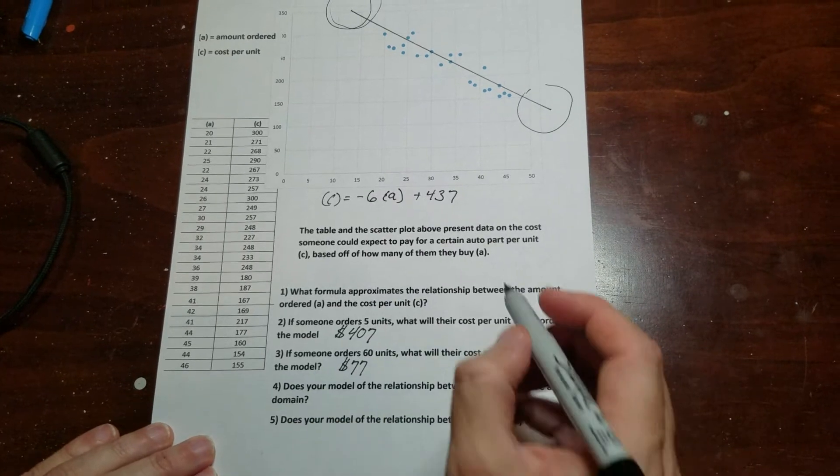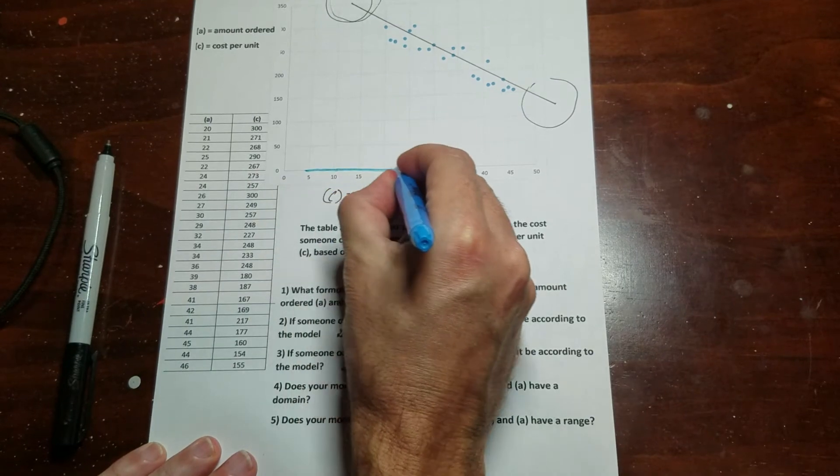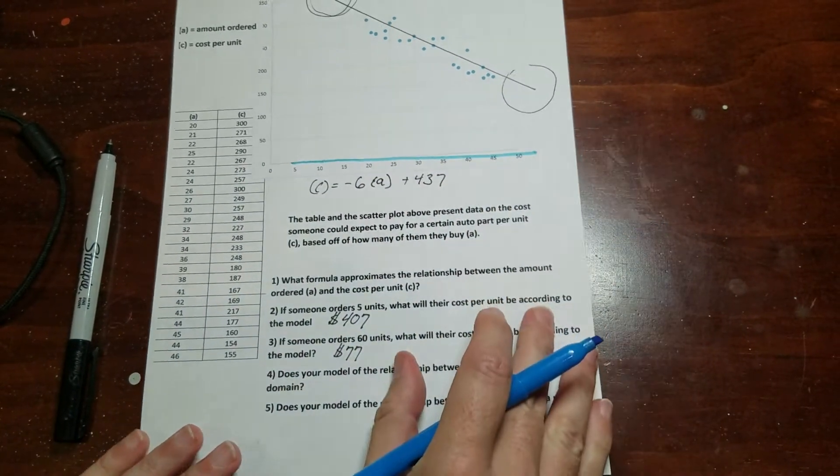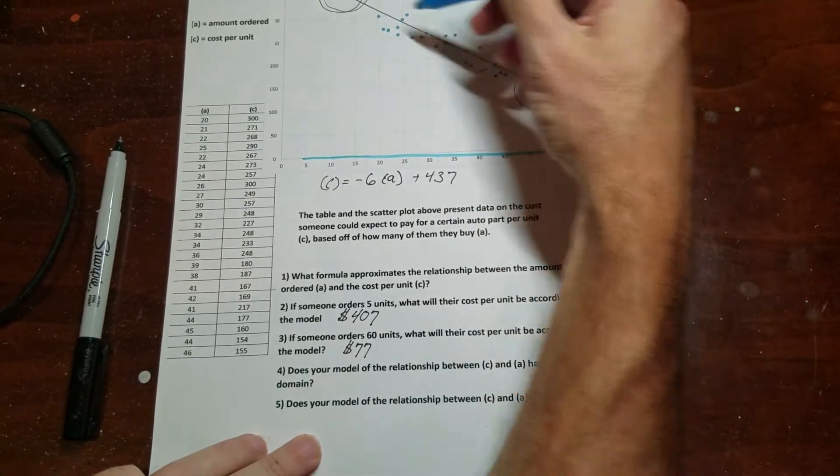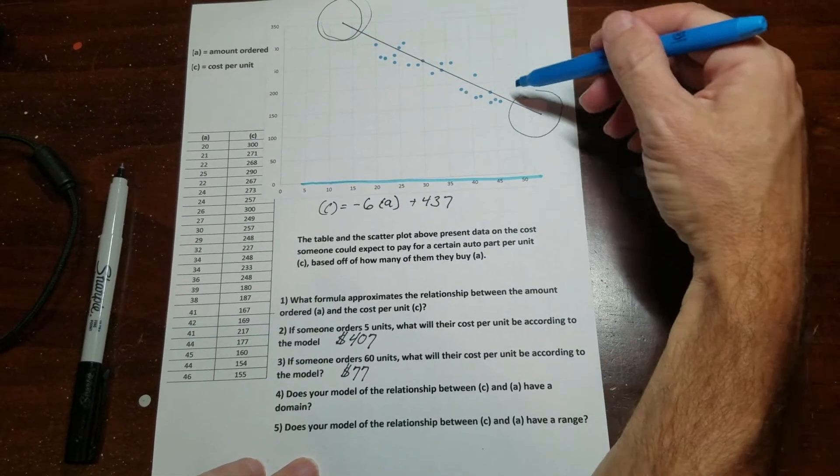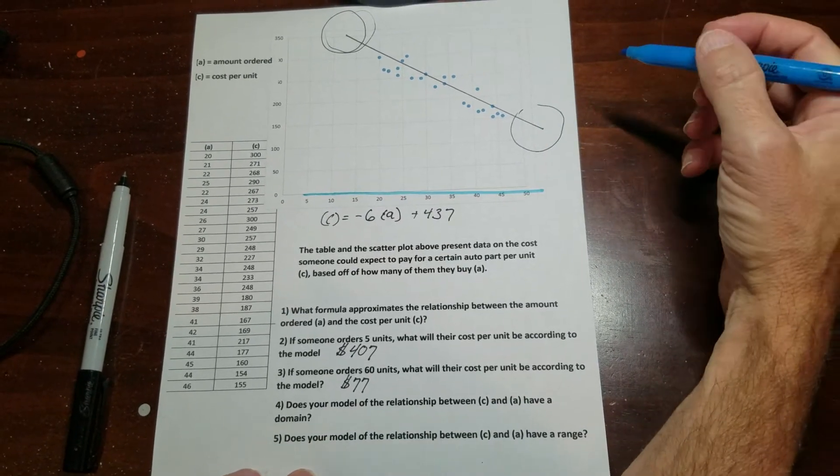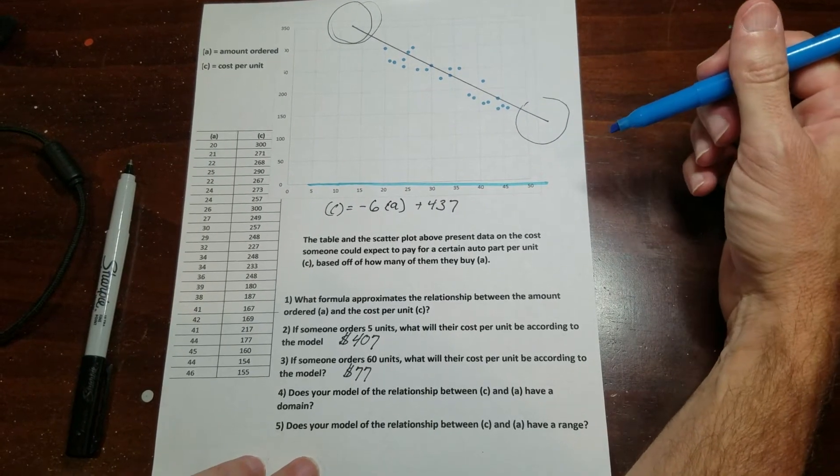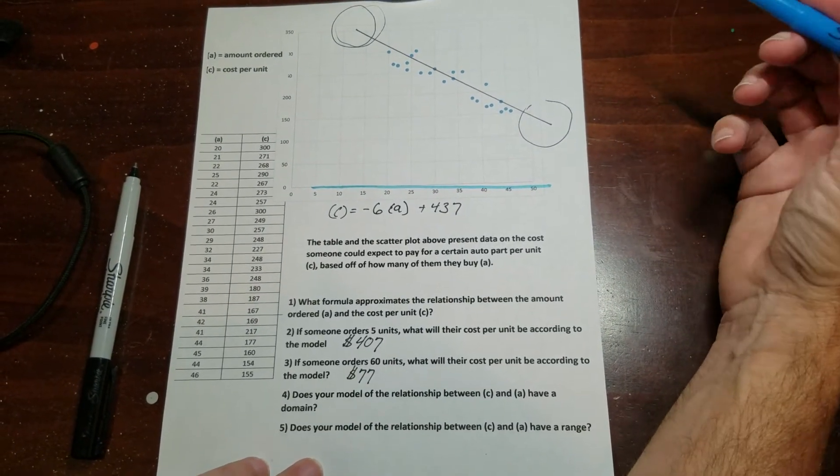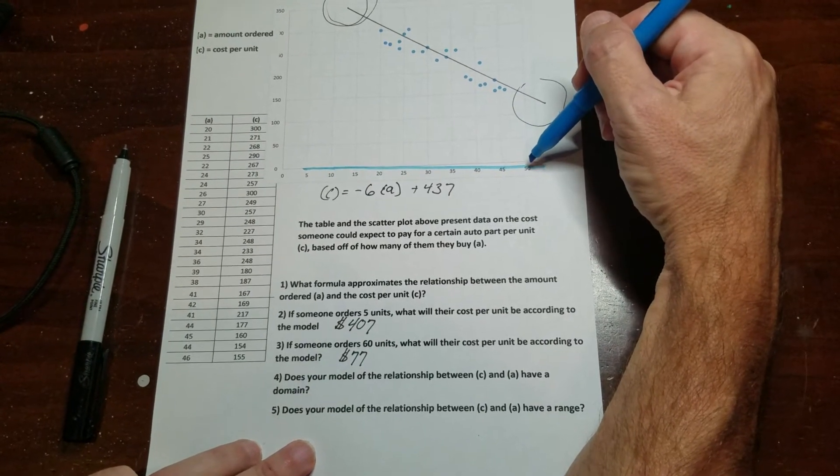So the domain is talking about where on this axis is the information true. And usually it's pretty safe to say, especially on one of these down sloping lines, you could go to zero, but that's a little bit crazy. Once the price starts to reach a point where you're like 'wow, that sounds really cheap,' you can cut it off. What I'm going to do is I'm going to cut it off here at 50.